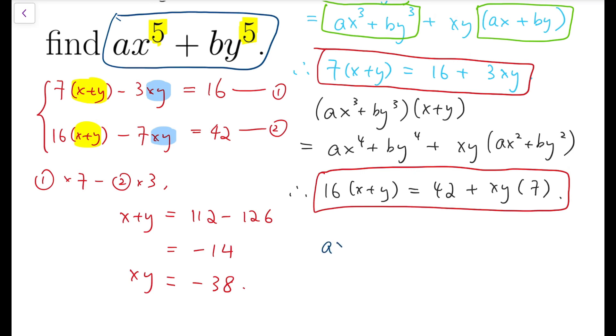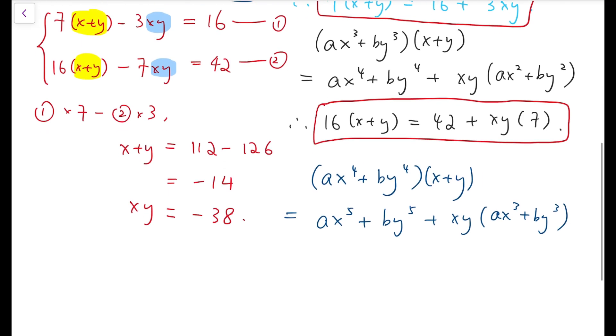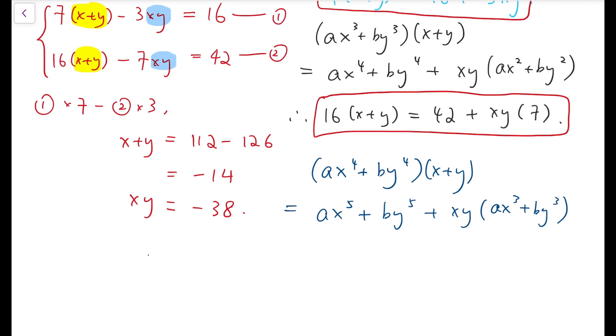So let's multiply x + y with ax⁴ + by⁴. That is equal to ax⁵ + by⁵ plus xy times (ax³ + by³). And from this we can say that therefore, now we know that x + y is minus 14, so we can say that minus 14 multiplied by 42 equals our required expression added by minus 38 times 16.